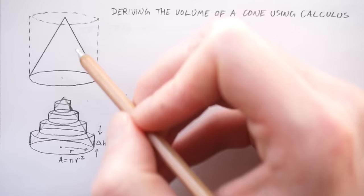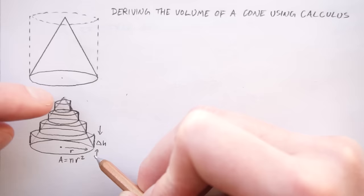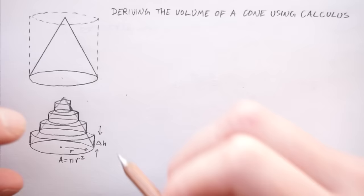Now, where calculus comes in is we actually shrink this delta h down to be infinitely small, which will mean that we've got infinitely many of these discs. And when you hit those infinities, that's when your approximation becomes exact. And then you can actually prove what the volume of the cone is.